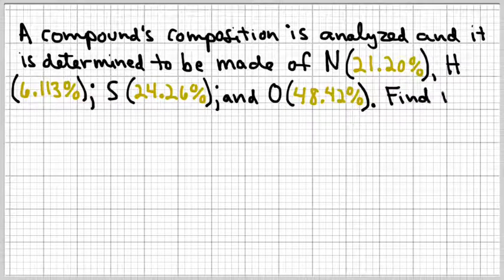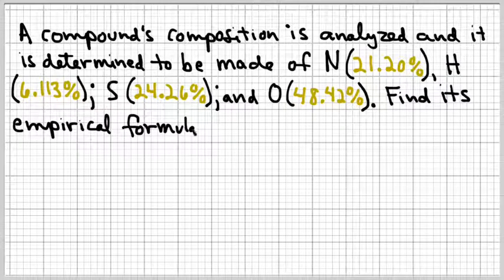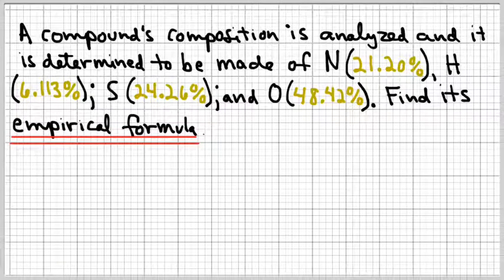So in this problem we've got a compound that's made up of four elements: nitrogen, hydrogen, sulfur, and oxygen. They're present in the percentages 21.20% for nitrogen, 6.113% for hydrogen, 24.26% for sulfur, and 48.42% for oxygen.